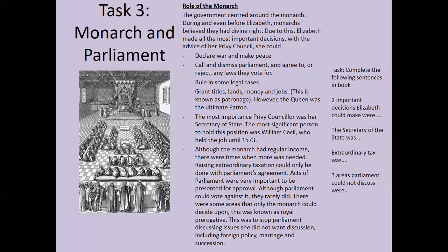This is a skill to build your communication in writing. Complete the following sentences: 'Two important decisions Elizabeth could make were...' 'The Secretary of State was...' 'Extraordinary tax was...' and 'Three areas that parliament could not discuss were...' This builds up your contextual knowledge. Give yourself five minutes, pause the video here, and then we'll finish up with the last few tasks of the lesson.